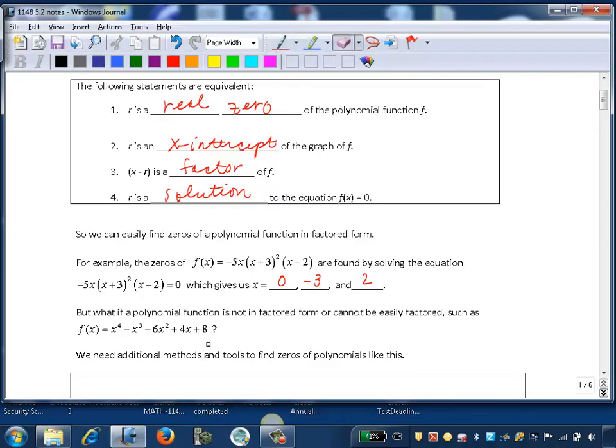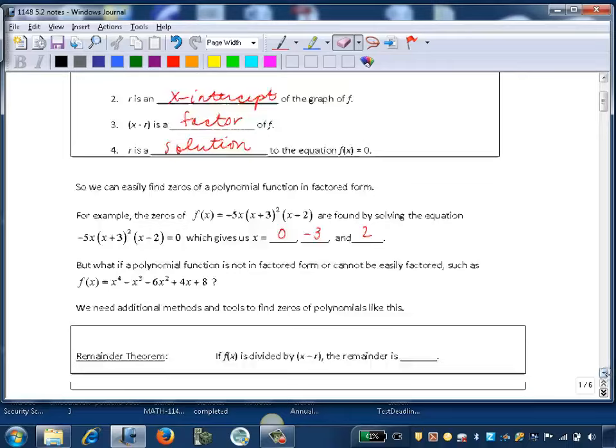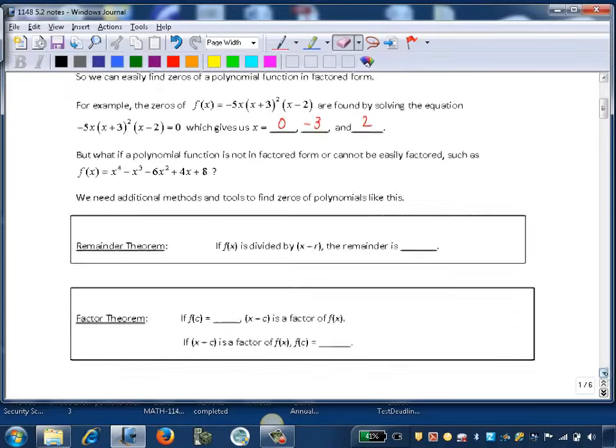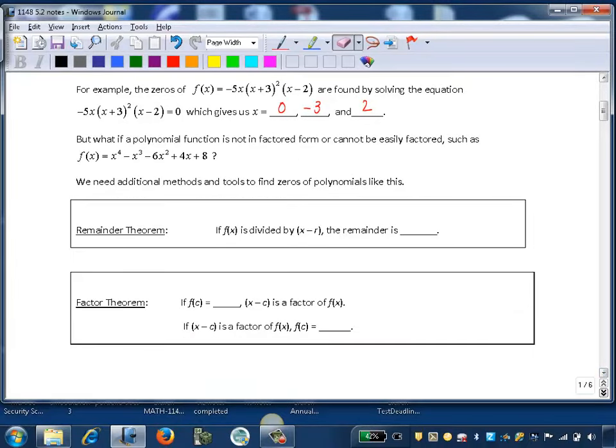But if a polynomial function is not in factored form or cannot be easily factored, such as f(x) = x⁴ - x³ - 6x² + 4x + 8, we need additional methods to find zeros of polynomials such as this.